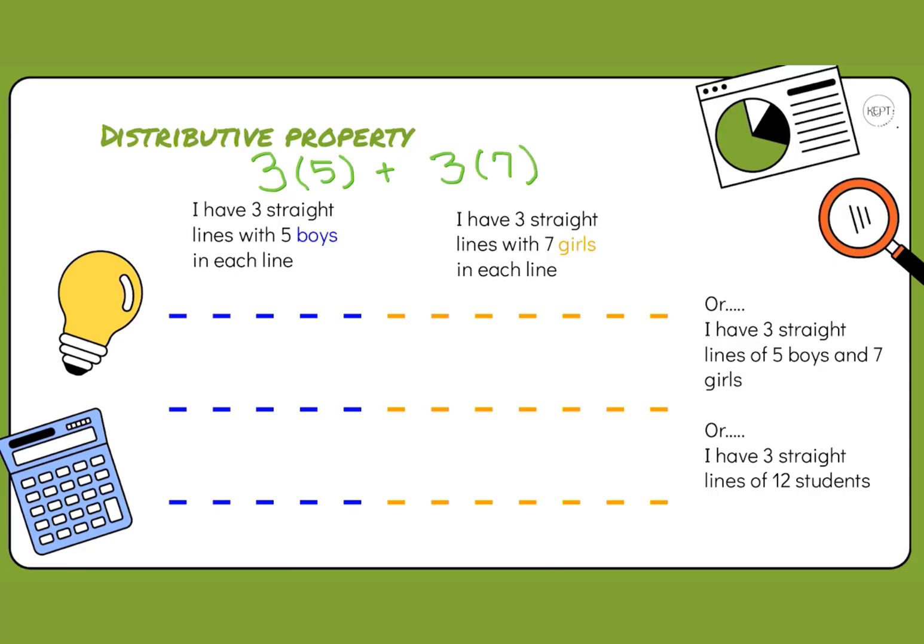Another way of looking at this is to say that I have three straight lines of five boys and seven girls. Another way we can look at this is that we have three straight lines of 12 students, which looks like 3 times 12.